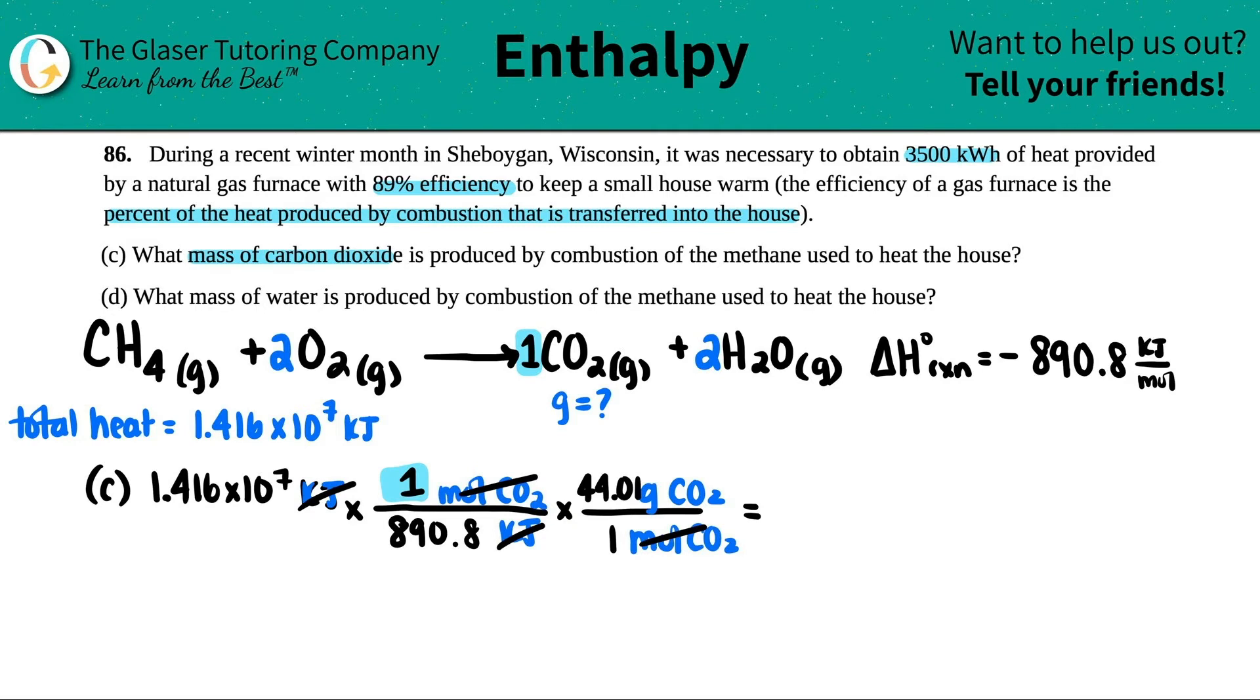And they didn't say specifically kilograms or grams. So let's see how big this number is. And maybe I'll convert it into kilograms. So 1.416 times 10 to the seventh divided by 890.8 and then times by 44.01. Big number.